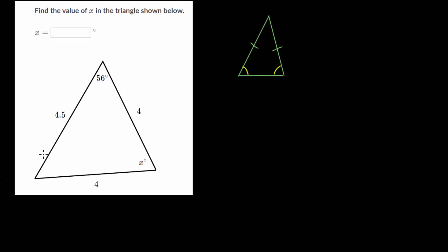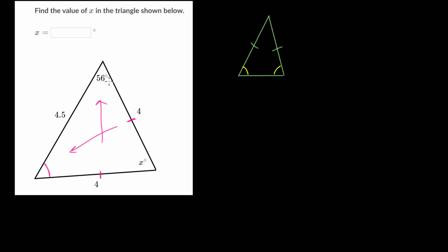Notice in this triangle we have two side lengths that are equal to each other, and they are different from the third one. If this was also four, then we would actually have an equilateral triangle. So these two sides are equal, which means the angles that are opposite these equal sides are equal as well. From that we can determine that this angle also has to be 56 degrees.